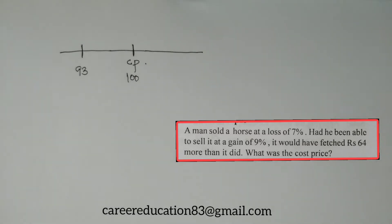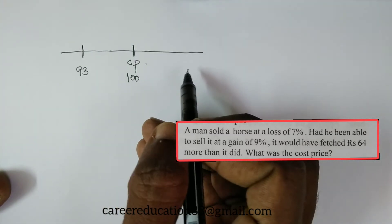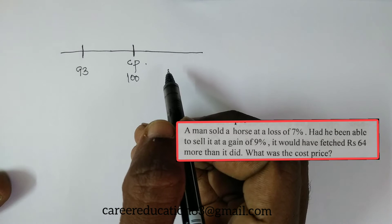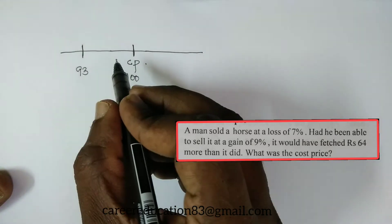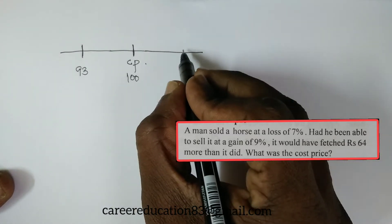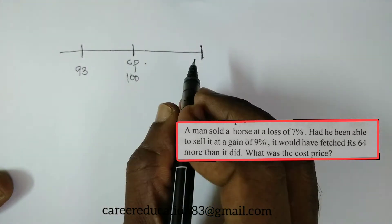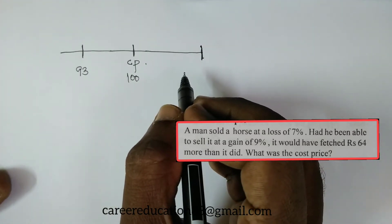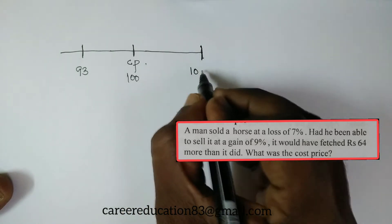Had he been able to sell it at a gain of 9% — this is the if condition — then the selling price would include profit. So with a gain of 9%, the selling price should be 109% of the cost price.